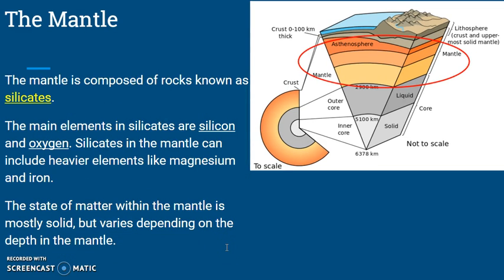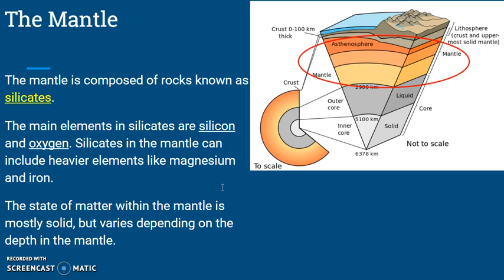The mantle is composed of rocks known as silicates. The main elements in silicates are silicon and oxygen. Silicates in the mantle can include heavier elements like magnesium and iron. The state of matter within the mantle is mostly solid, but it varies depending on the depth in the mantle.